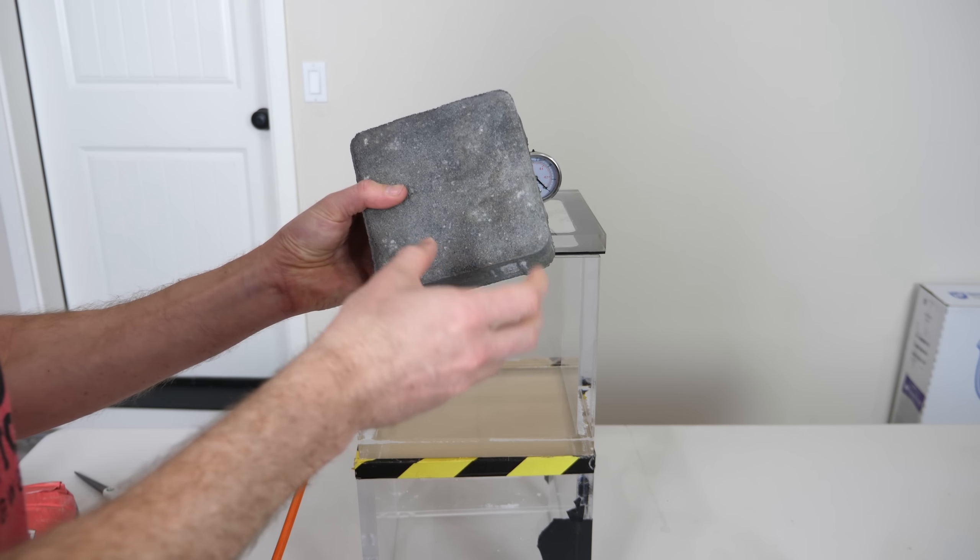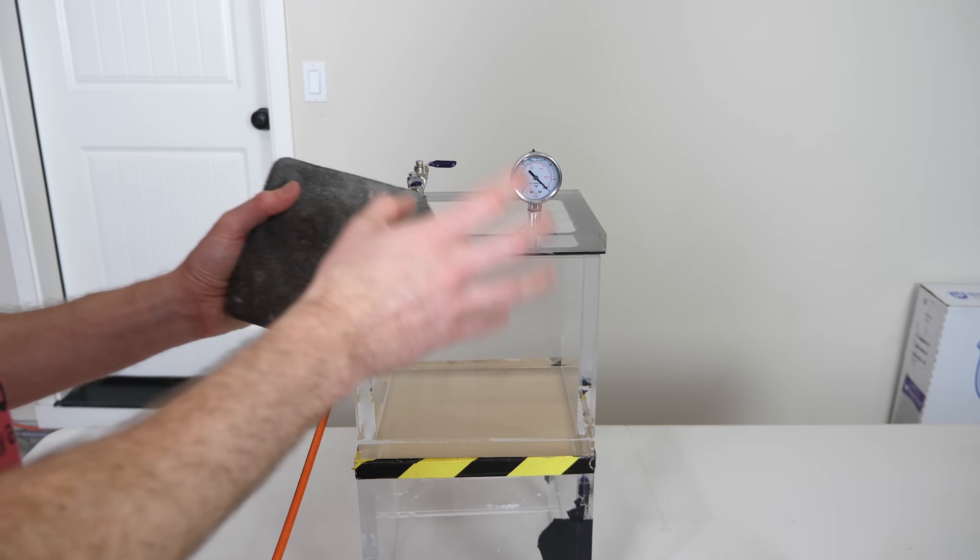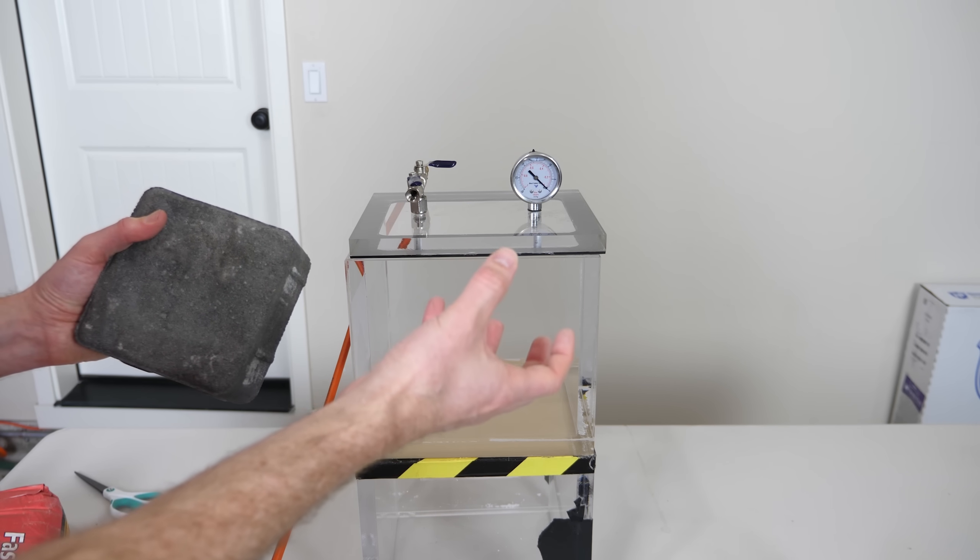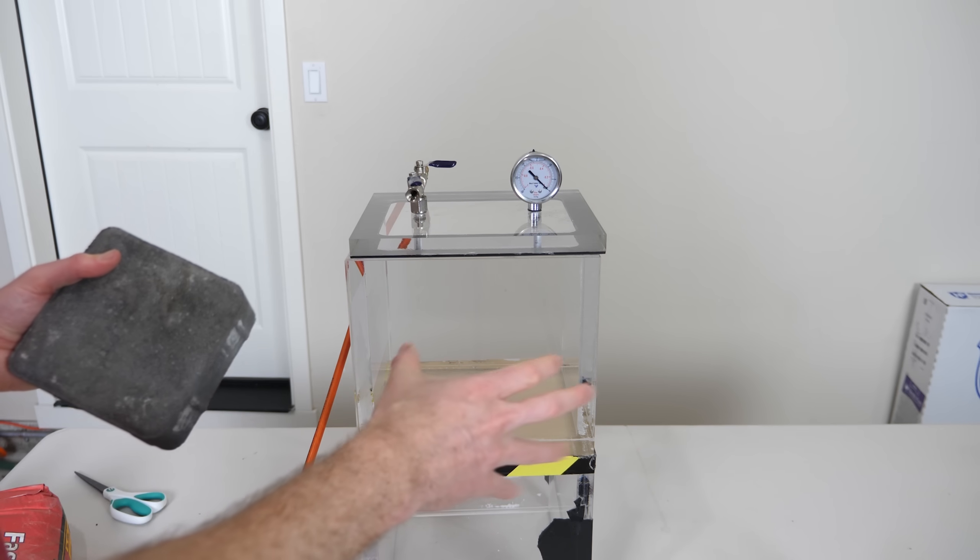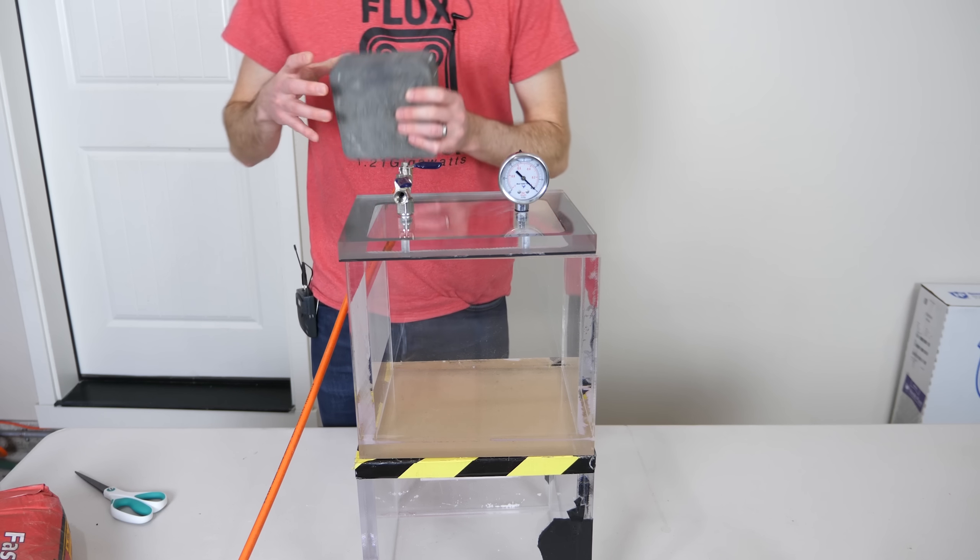I'm going to put concrete in the vacuum chamber and see what happens to it. And then after that test, I'll do one more test in the vacuum chamber and see if you actually need air in order for concrete to solidify. So what happens if we have wet concrete and try to let it dry in the vacuum chamber?